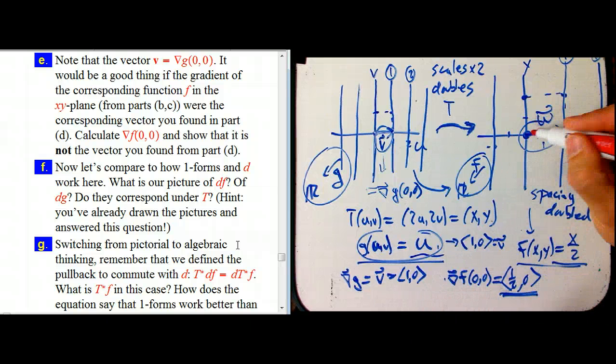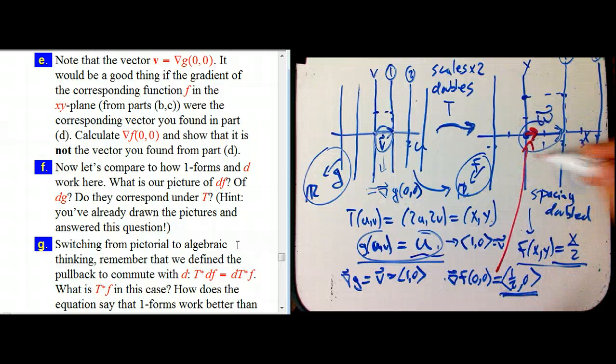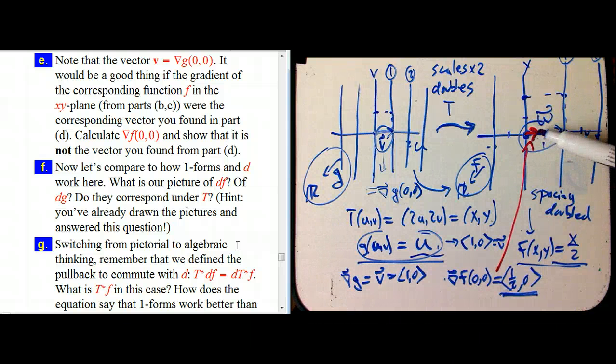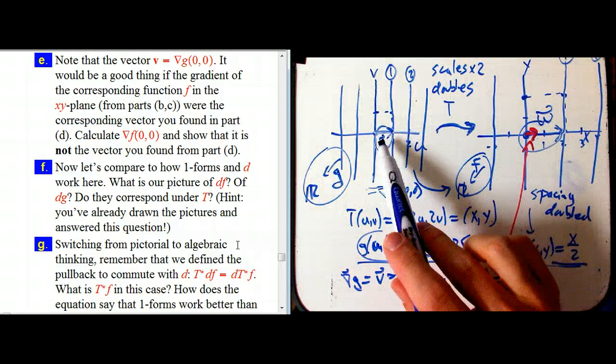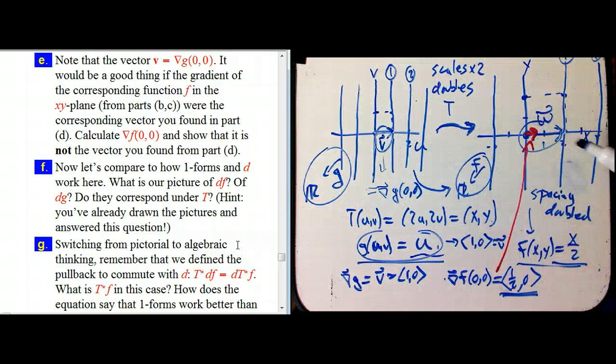This, this would be this guy. Let me draw it in red. That's the gradient of f. That is not w. That is not the vector that corresponds to v. This is, what this does is it makes precise the observation I had in the very first video,